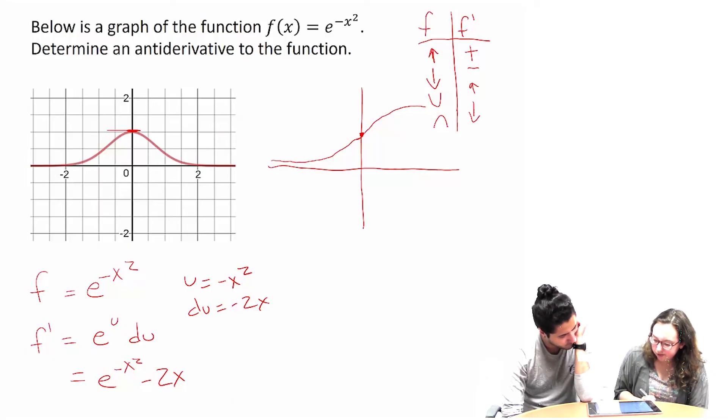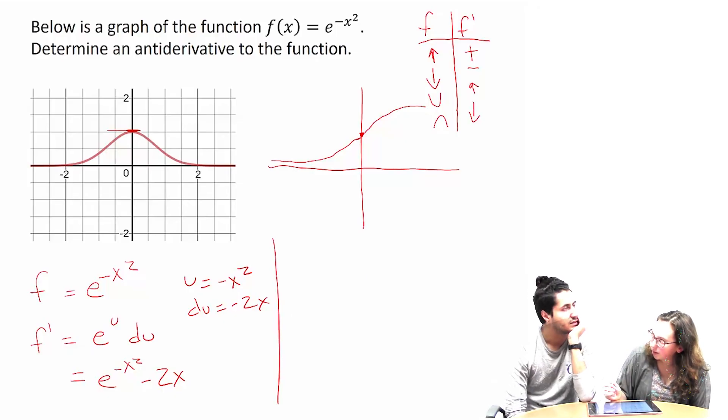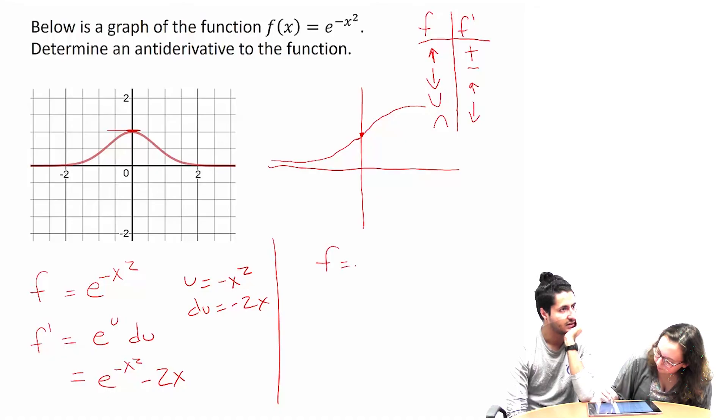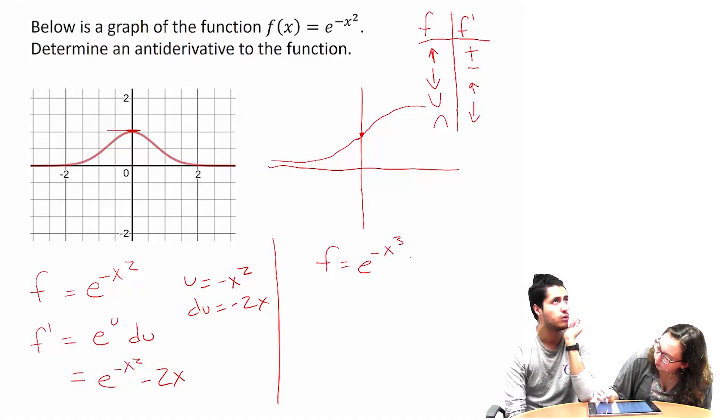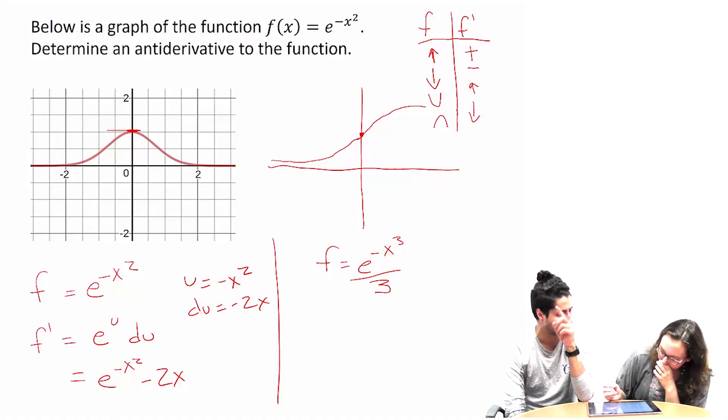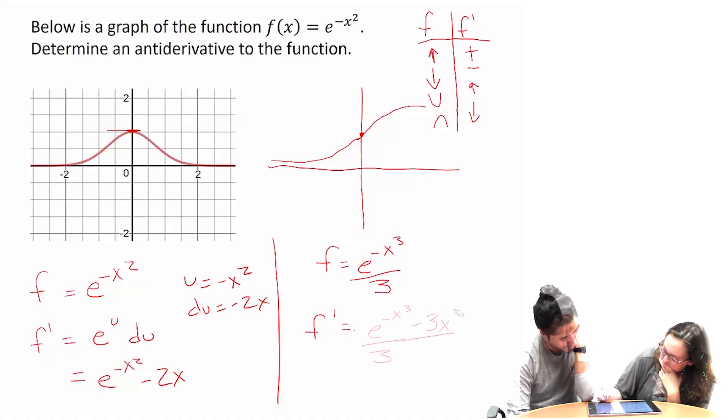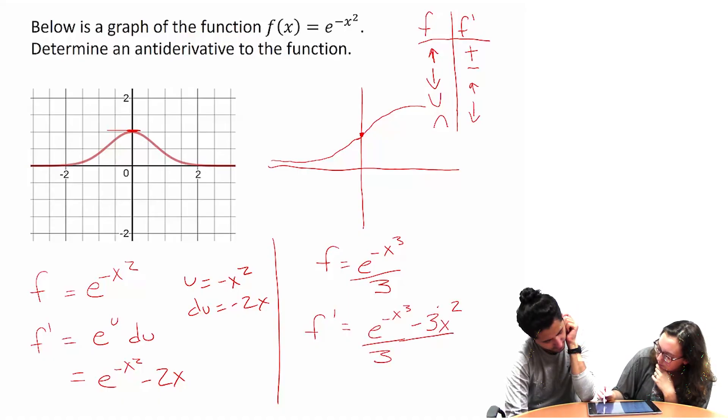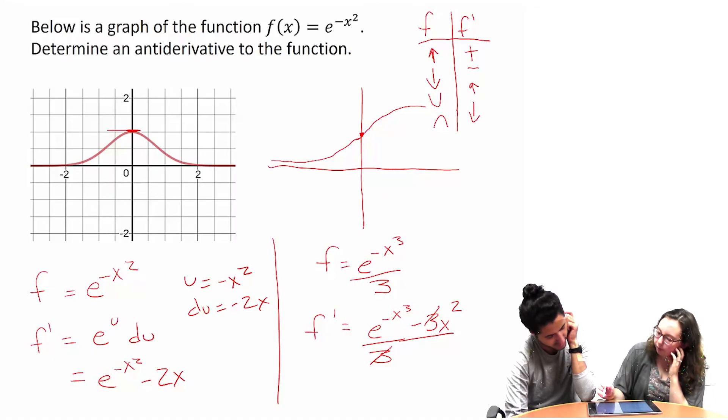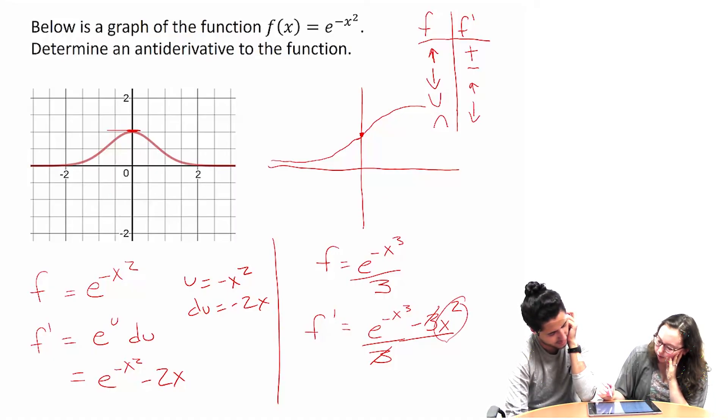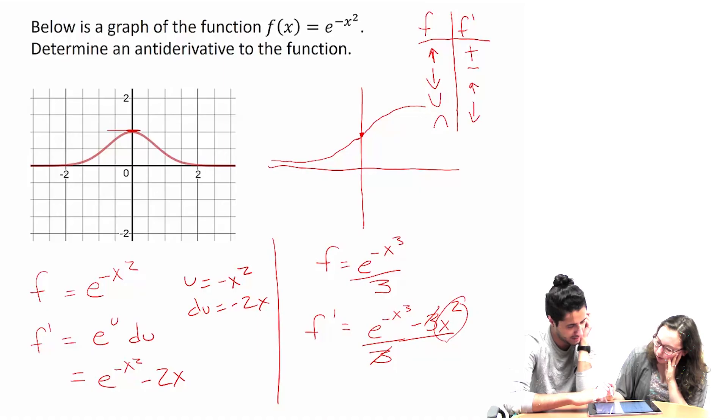Do you have a different one? What if we did e to the negative x cubed all over 3 maybe? Oh, because of the—yeah, that might work. So what would that look like? So the 3's cancel, but then we're left with this x squared, and then we also have like cubes up here and stuff.